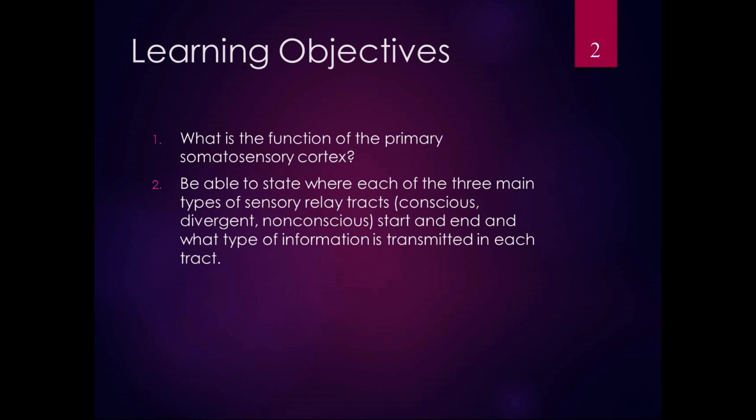The primary somatosensory cortex is the place in the cerebral cortex where the sensation information ends up. What it's going to do is tell us what that sensation is — it's going to help distinguish between different sensations. That's its main function, and we'll talk more about that.